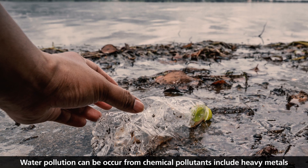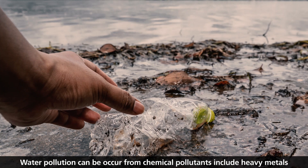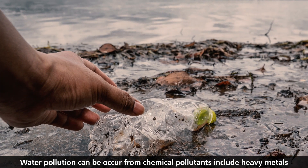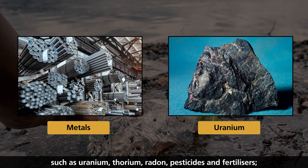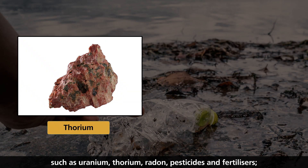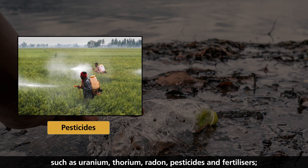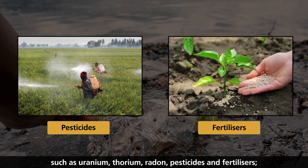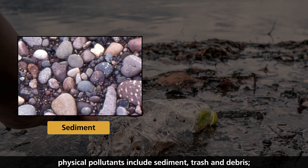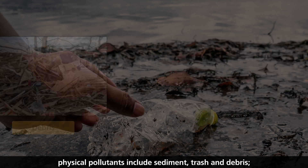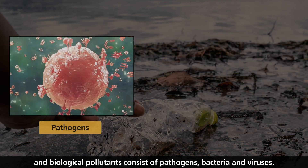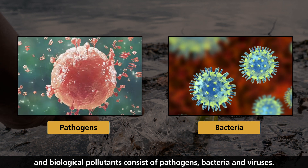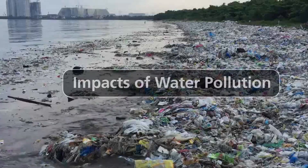Water Pollution: Water pollution can occur from chemical pollutants, which include heavy metals such as uranium, thorium, radon, pesticides, and fertilizers. Physical pollutants include sediment, trash, and debris. Biological pollutants consist of pathogens, bacteria, and viruses.